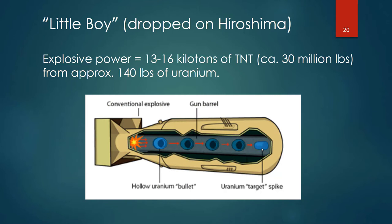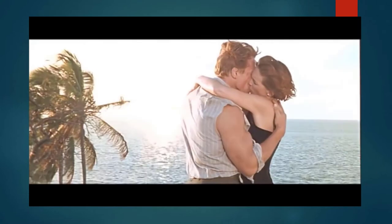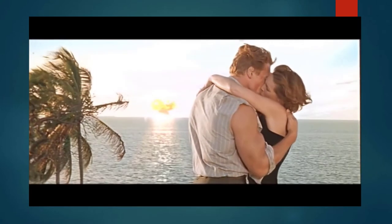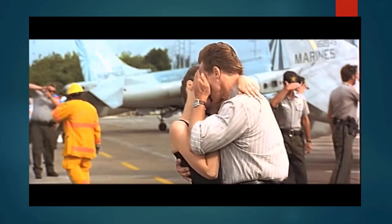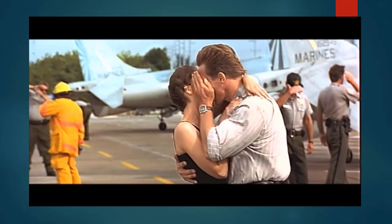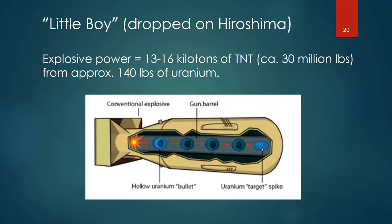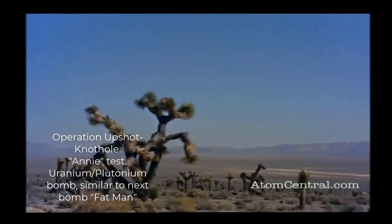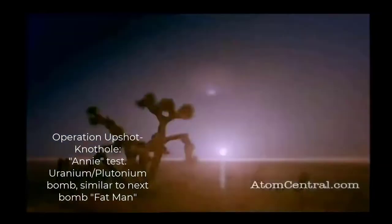For those of you that have ever seen Terminator or True Lies — you remember in True Lies near the end, they hide their eyes while they're kissing, and there's this flash over in the Florida Keys from a nuclear bomb being detonated. That's why they shield their eyes.